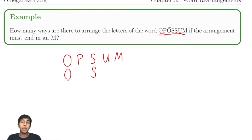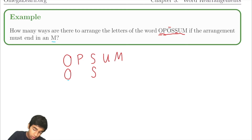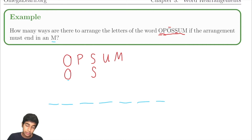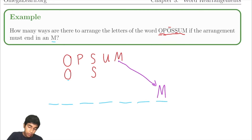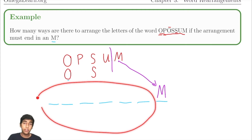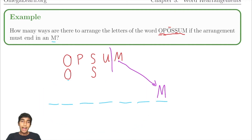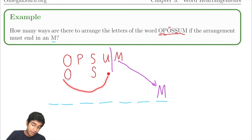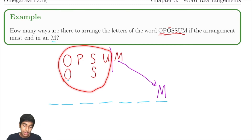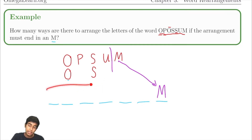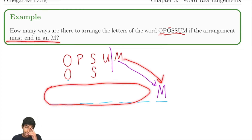How many ways to arrange these letters if the arrangement must end in M? There are seven characters, but the last one has to be an M. So from the remaining letters, we must find the first six letters — essentially, all we have to do is find the number of rearrangements of the remaining letters, and then the last letter is M.